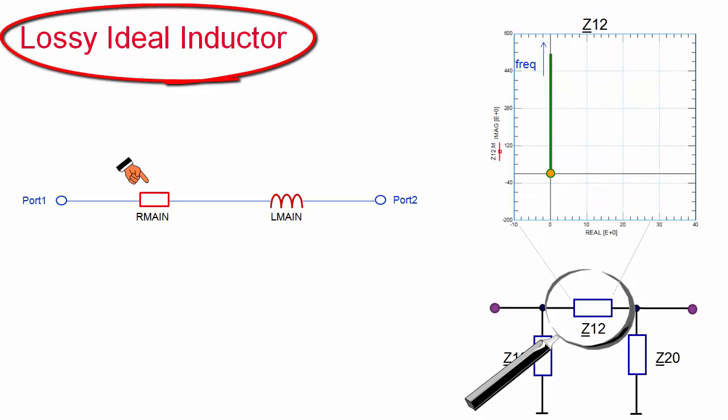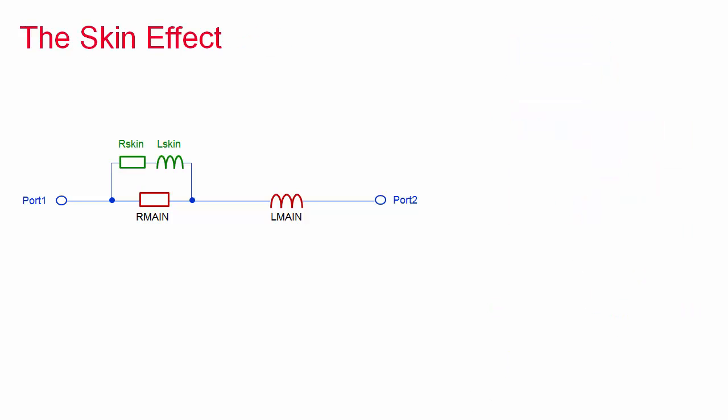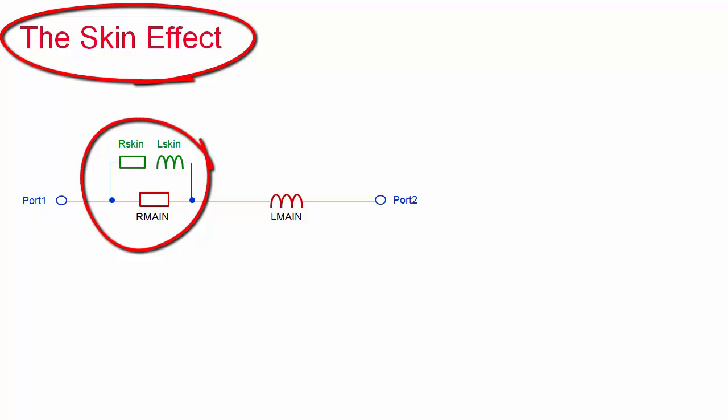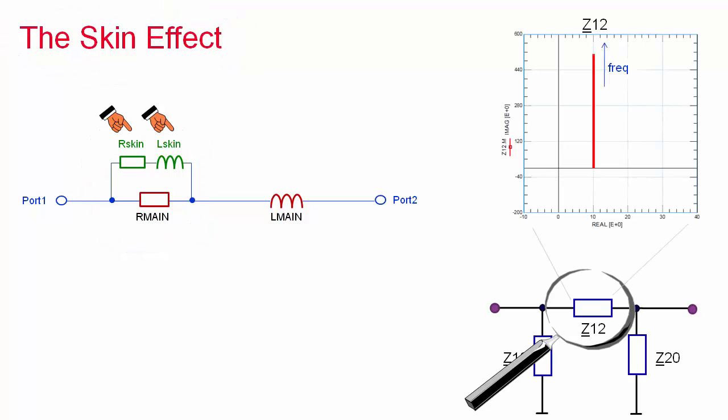Any real, existing, physical inductor exhibits also resistive losses, represented by R-main. And this series resistor shifts the inductor trajectory to the right. The resistive part of the inductor is affected by the skin effect, more resistance at higher frequencies. This is modeled by the components R-skin and L-skin in parallel to R-main. And the impedance trajectory of Z12 gets a kink at low to medium frequencies.